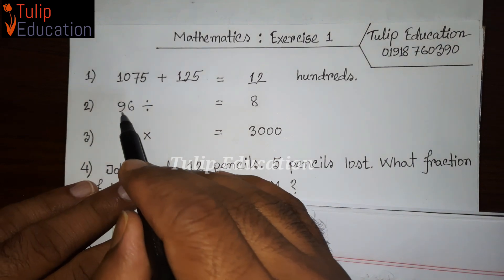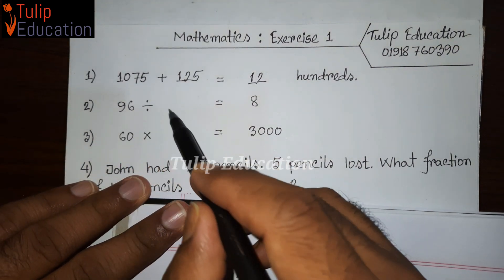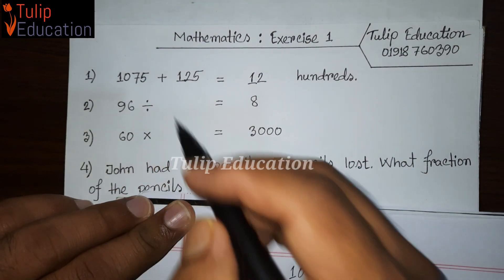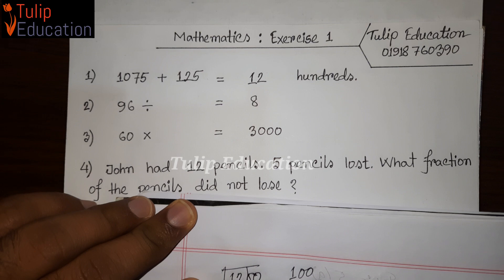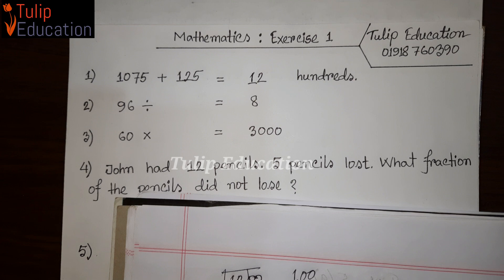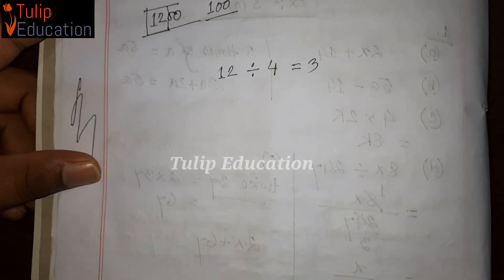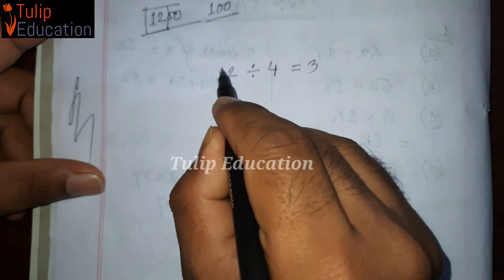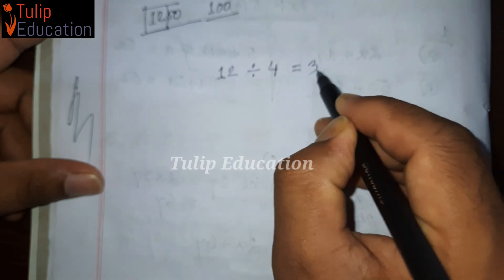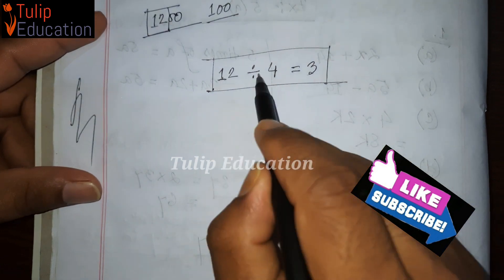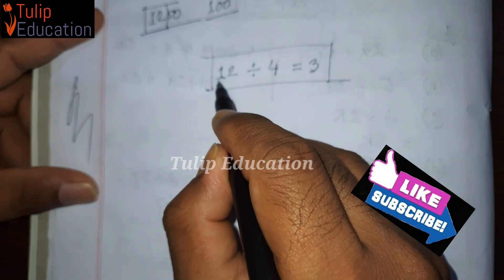The second question is that 96 divided by a number is 8. The result is 8. We are going to find the number. We are going to add 8 to the number, 12 numbers and 3 times.